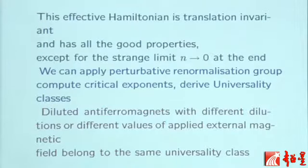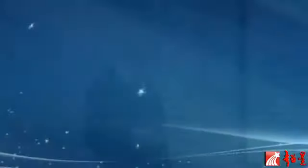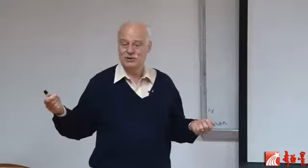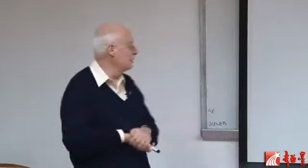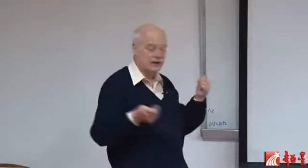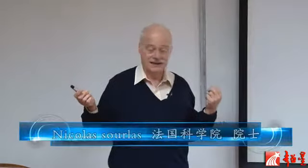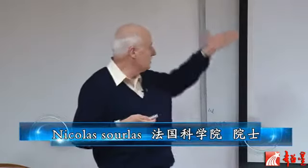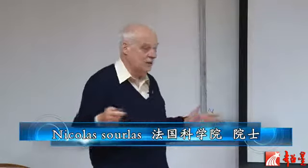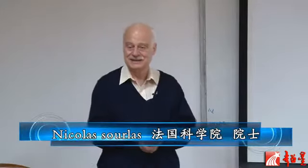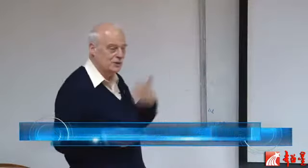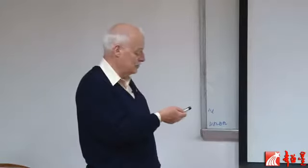That's the usefulness of this replica trick: the effective Hamiltonian is translation invariant. It has only the good properties of a good Hamiltonian, except for this strange limit that we have to take — n goes to zero at the end. If we believe we can apply perturbative renormalization group, compute critical exponents, and derive universality classes in the usual way, and believe that this remains valid in the limit n goes to zero — then you will find, for example, that diluted antiferromagnets with different dilutions or different values of applied magnetic field all belong to the same universality class.